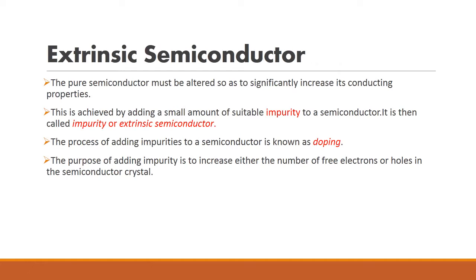The next one is extrinsic semiconductor. Extrinsic semiconductor means it is an impure form of semiconductor — that means if we add impurity to the intrinsic semiconductor, it becomes an extrinsic semiconductor. In order to improve the intrinsic semiconductor, we go for extrinsic semiconductor by adding impurity to it. This addition of impurity is called doping. Doping is the process of adding impurity to the pure form of semiconductor in order to increase the conductivity, either by increasing the number of free electrons or the holes.